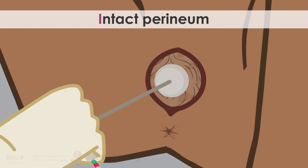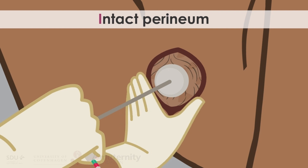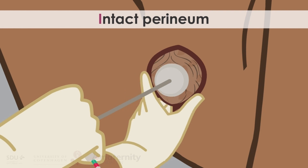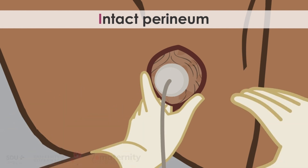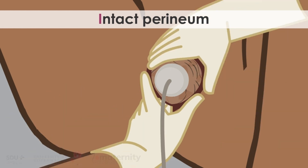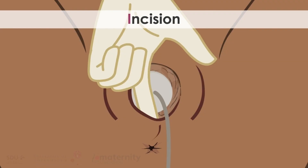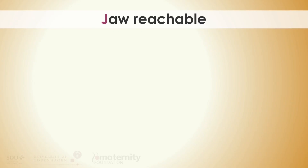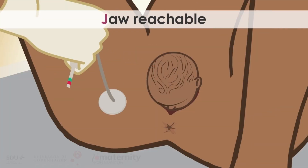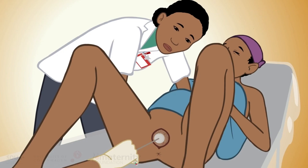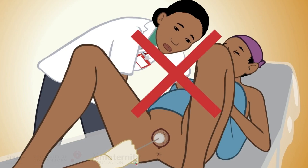Intact perineum: When the head is delivered during the next contraction, protect the perineum with one hand. Squeeze the index finger and thumb together at the posterior part of the head to prevent stretching of the perineum and lift the head upwards and away from the perineum, while the other hand keeps the head from coming too fast. An incision is only rarely needed. When the jaw is reachable, release the vacuum and remove the cup. Remember that it's not recommended to apply manual fundal pressure to facilitate childbirth.